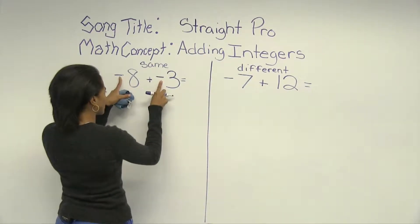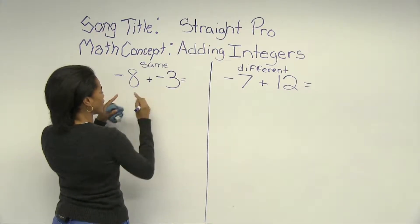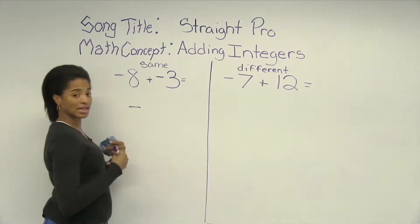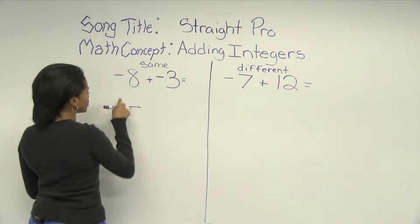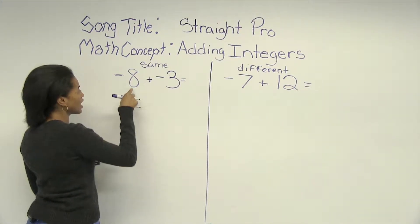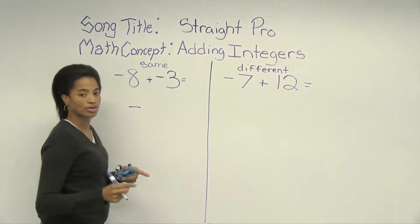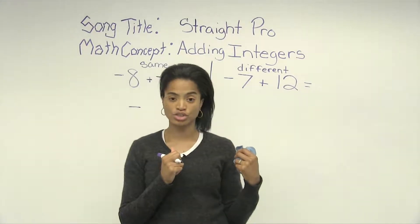Keep the sign that you see. And so for your sum, that's the answer to an addition problem, you are going to keep the sign, and you are going to add the absolute value of the two integers. Absolute value is just the distance that integer is from zero.